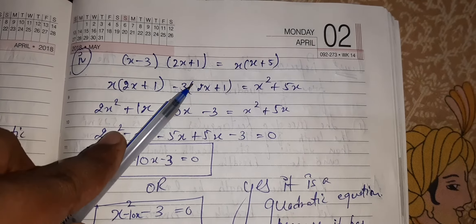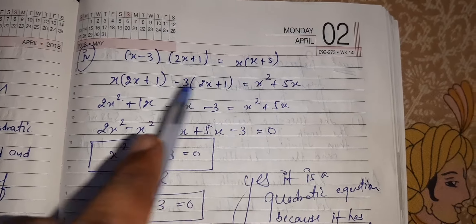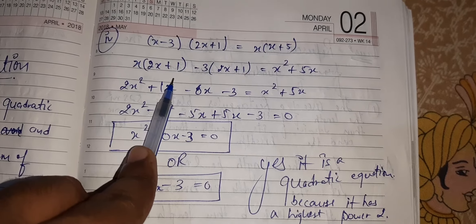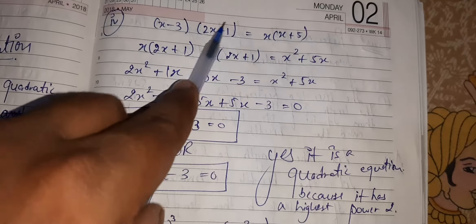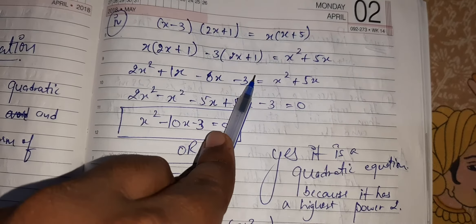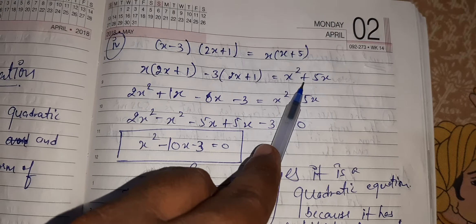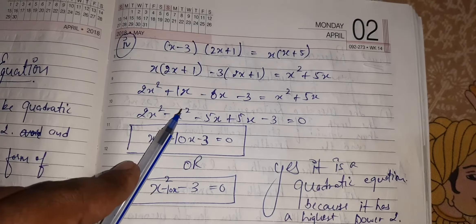X minus 3, 2X plus 1 is equal to X, X plus 5. Solve the brackets. I have solved the brackets. X this side, this minus 3, this is equal to X squared plus 5X. I bring this side.